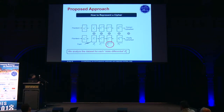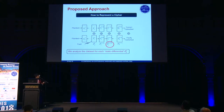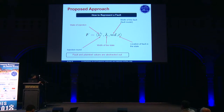Let's see how we do it. We have a formalization: we formalize the execution of a cipher by considering two executions — one is the correct execution and another is the faulty execution — represented as a sequence of states. When we take the differential, we symbolically represent each differential as state differential delta_ij, and we analyze this differential itself. The parameterized fault model specifies the state where the fault is injected, the width of the state — a very important parameter which determines the fault model — and the location of the fault in the state, i.e., which byte has been corrupted.